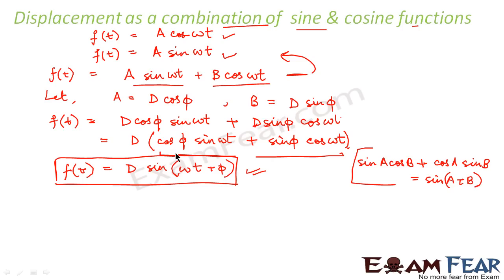So, this tells us that displacement can be expressed as a combination of sine and cosine function. But, while doing this interpretation, we have introduced two new terms that is D and φ.